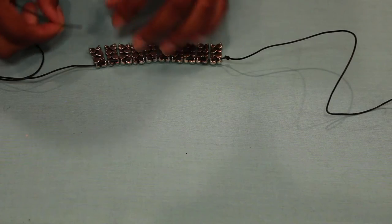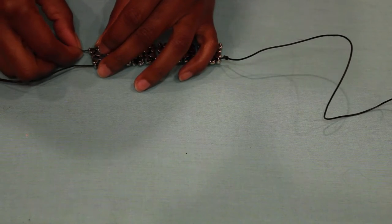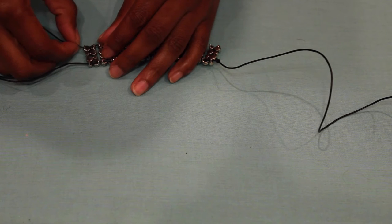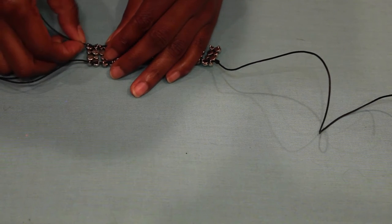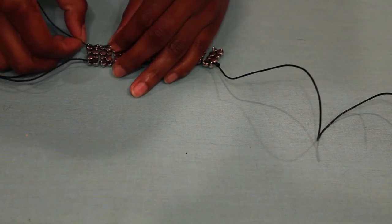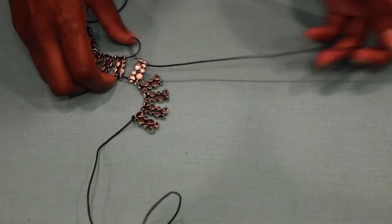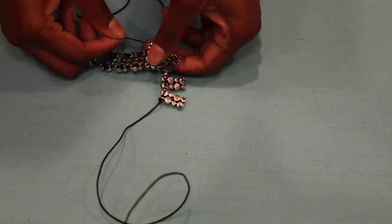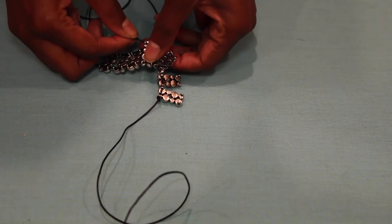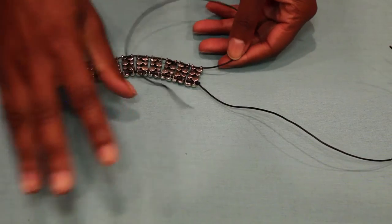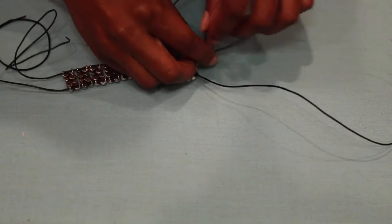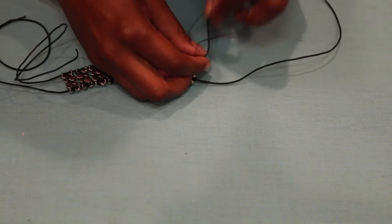Once you're done tying this knot, you're just going to go ahead and thread your second string into the bottom loops of your beads. So like I said before, each of the beads has two holes and you're just going to take your cording and thread it through all of them.